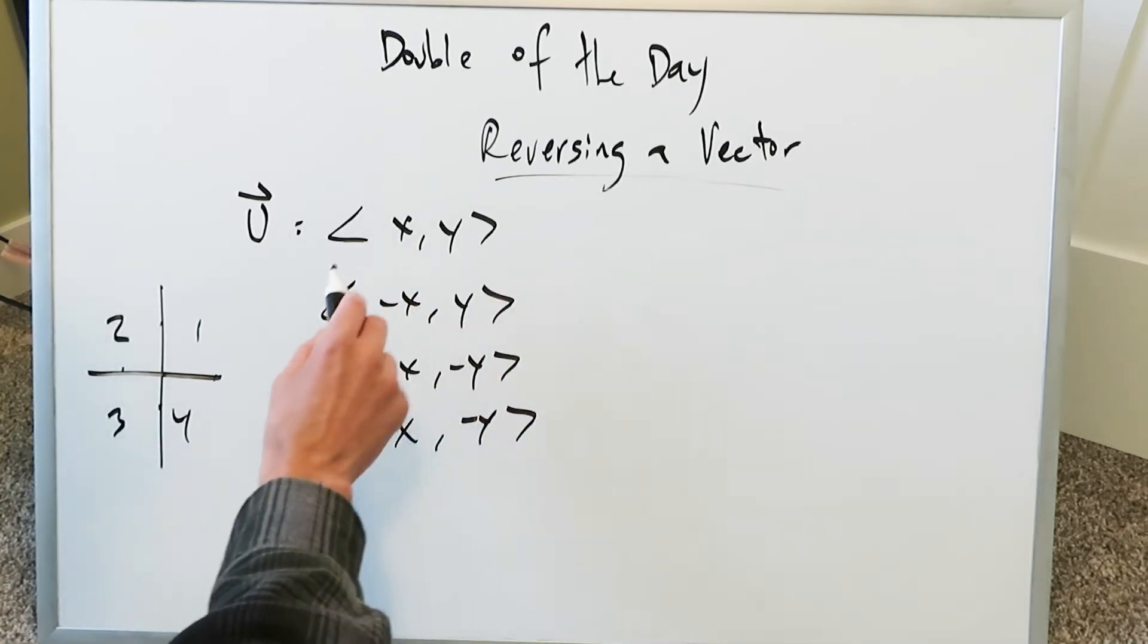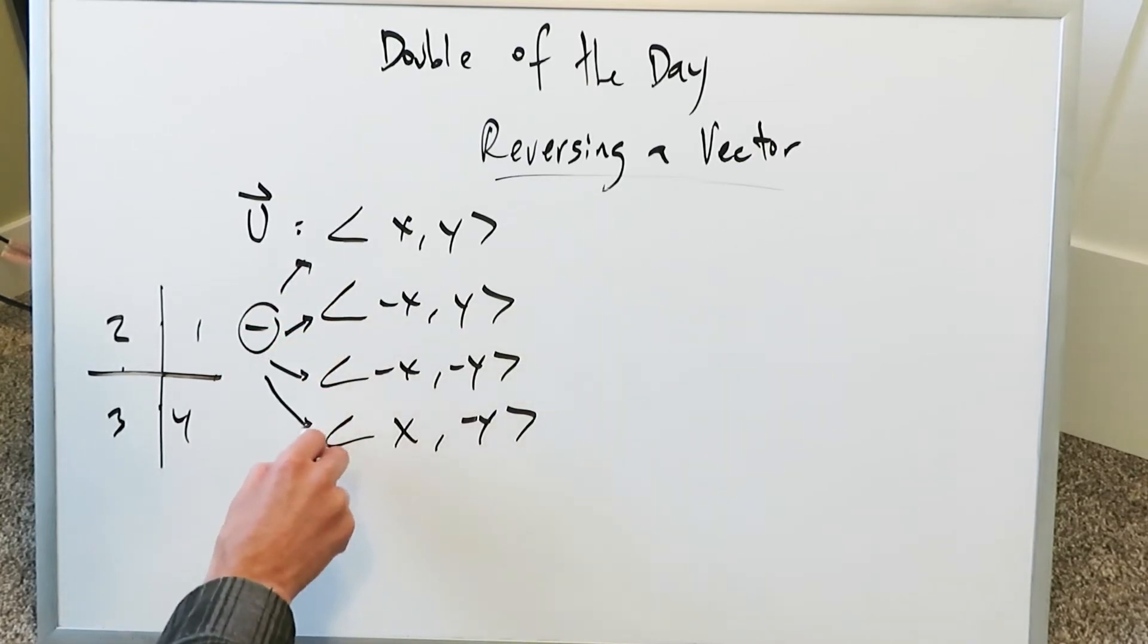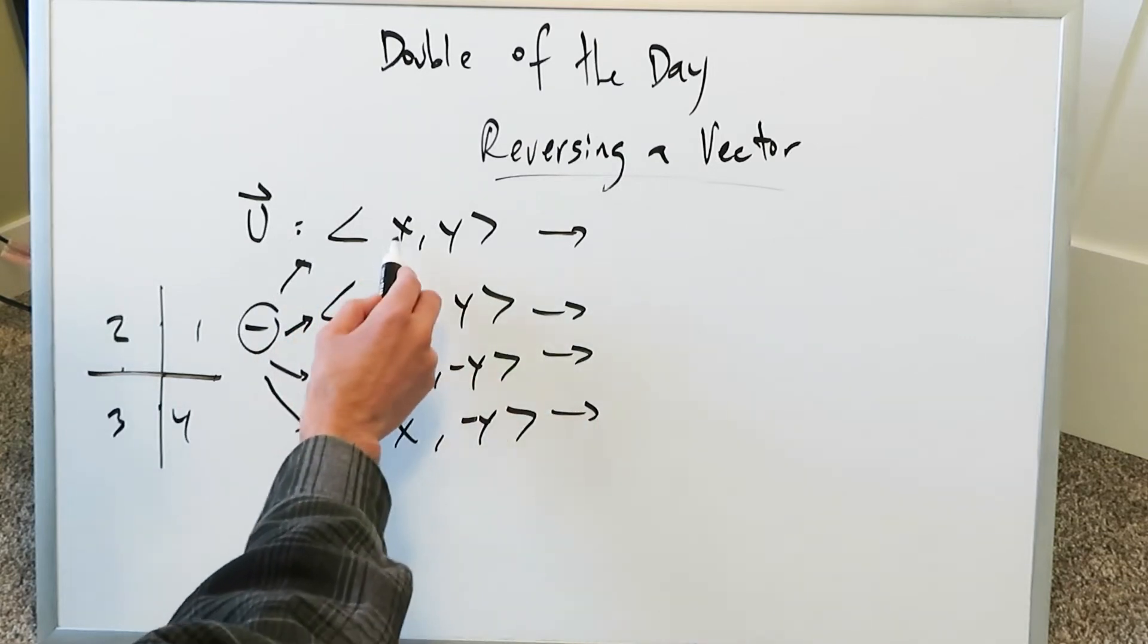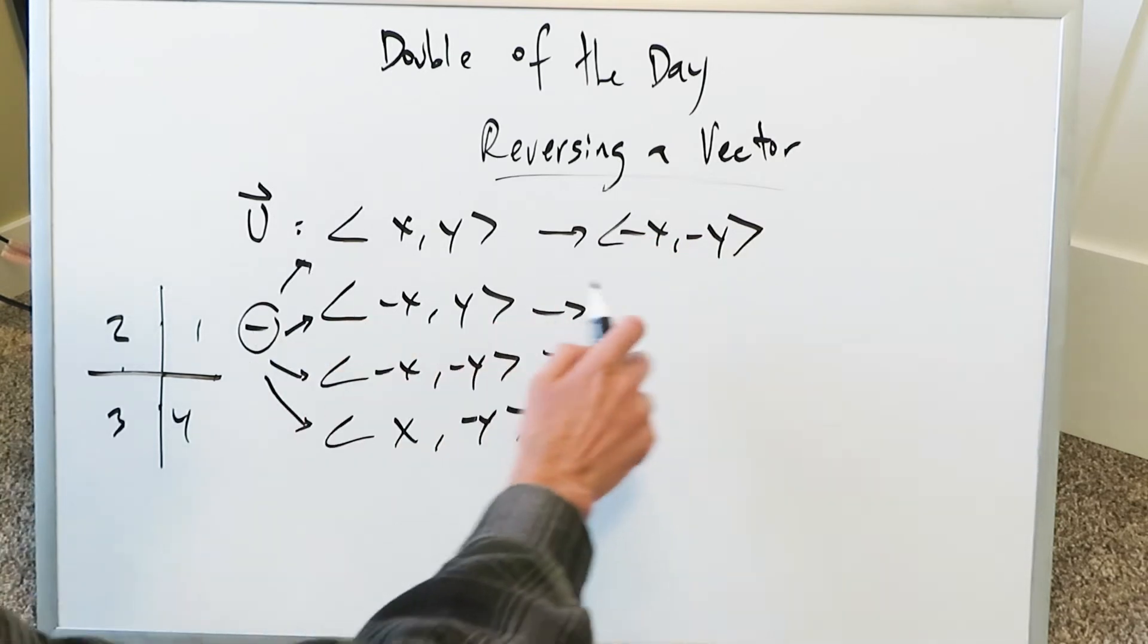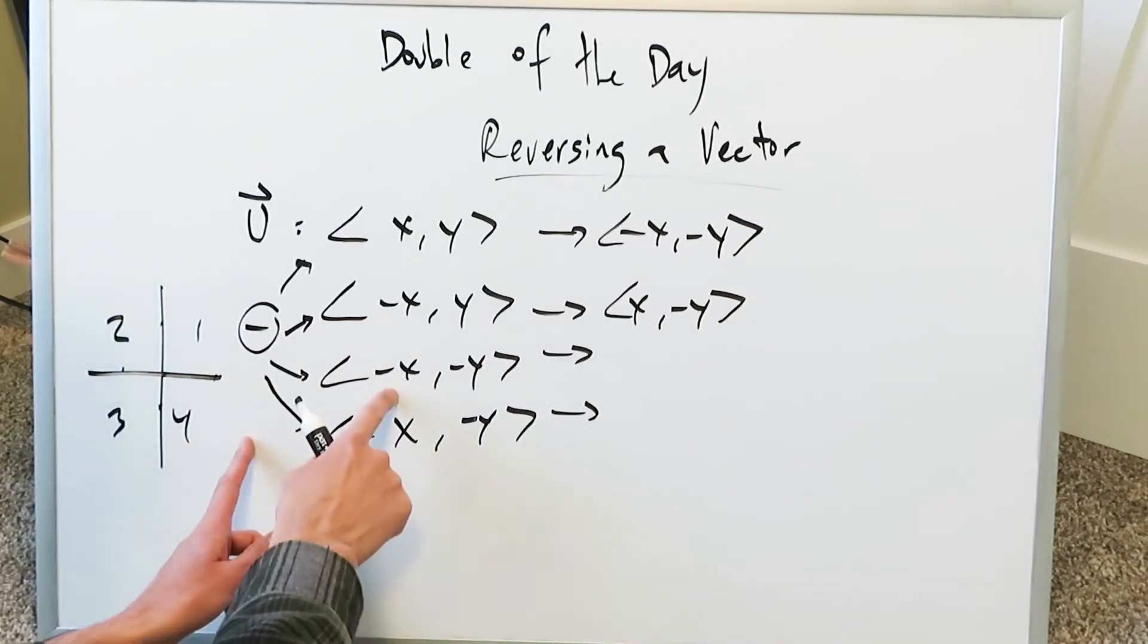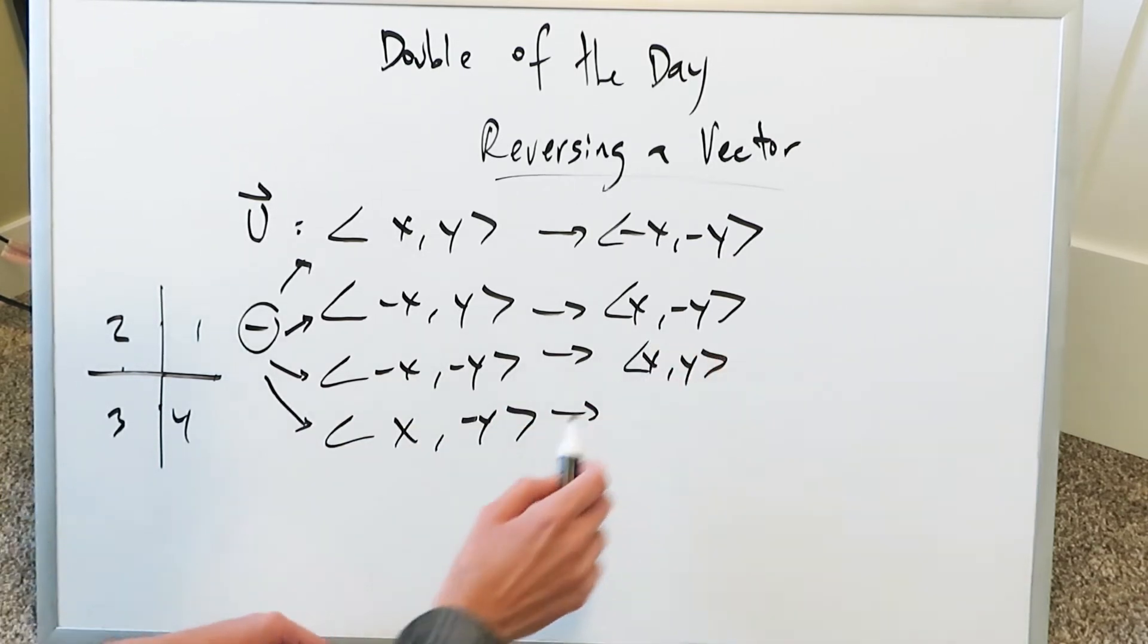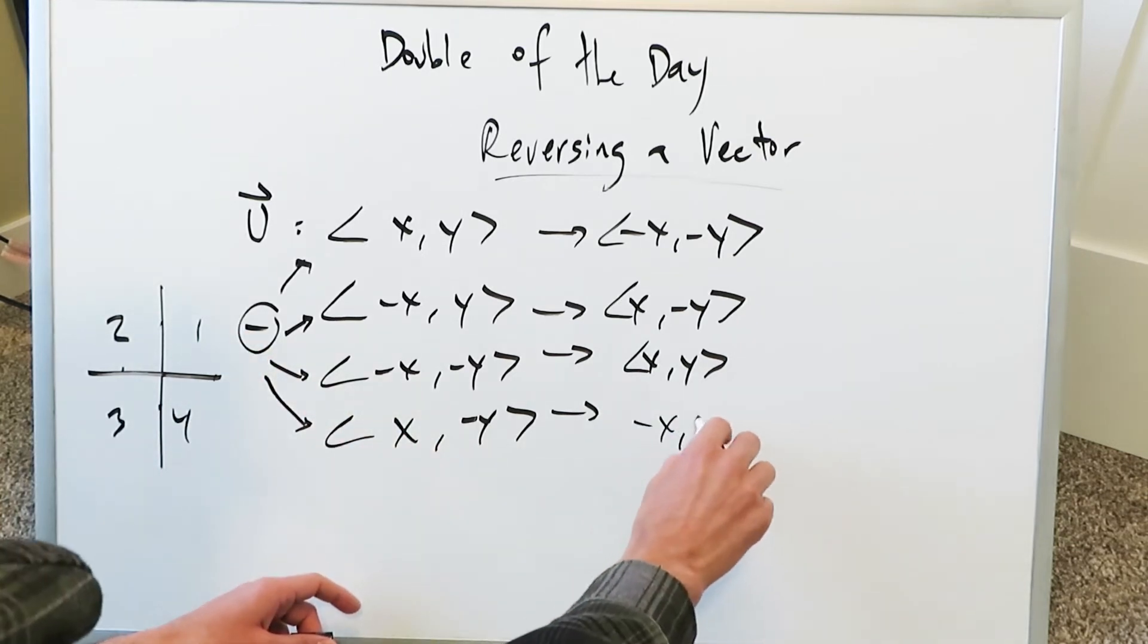In each of these instances if you were to apply this minus sign to all of these you'll see an exact reverse effect will occur. This will become (-x, -y). This will become (x, -y). This will become (x, y). This will become (-x, y).